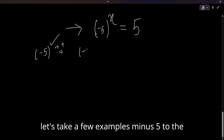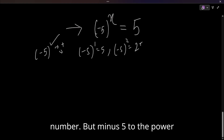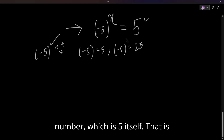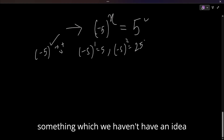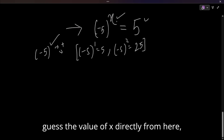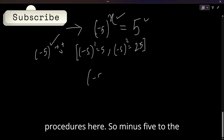For example, minus 5 to the power 1 is -5, and if you raise it to an even number it gives you a positive number. But finding minus 5 to the power of something that produces positive 5 — that is not something you can guess directly. We will follow standard mathematical procedures here.